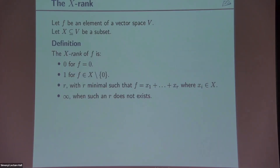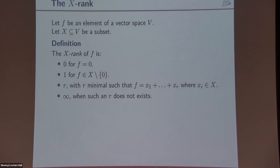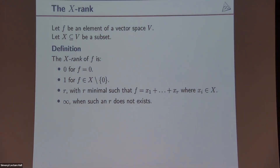First, here is something you could do: take a vector space and try to define a rank function on it by taking any subset X. The rank of the zero element is zero, all elements in X have rank one, and more generally the rank is r if you can write your element f as a sum of r elements in X that are minimal. If you cannot do that at all, the rank is infinite.